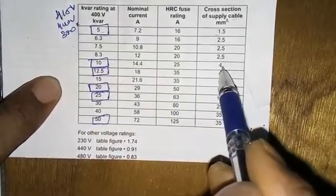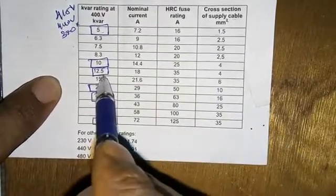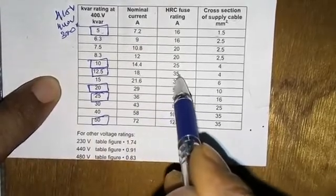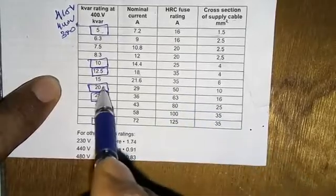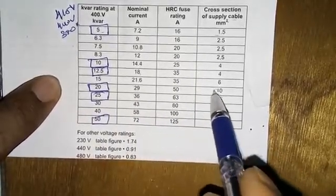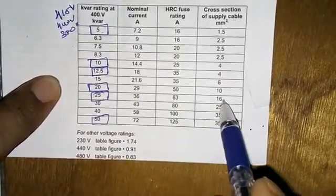This is the standard. For 12.5 kVAR, it's 18 ampere current consumption with 35 ampere HRC fuse and 4 square mm cable. For 20 kVAR, it's 29 ampere with 50 ampere HRC fuse and 10 square mm cable.